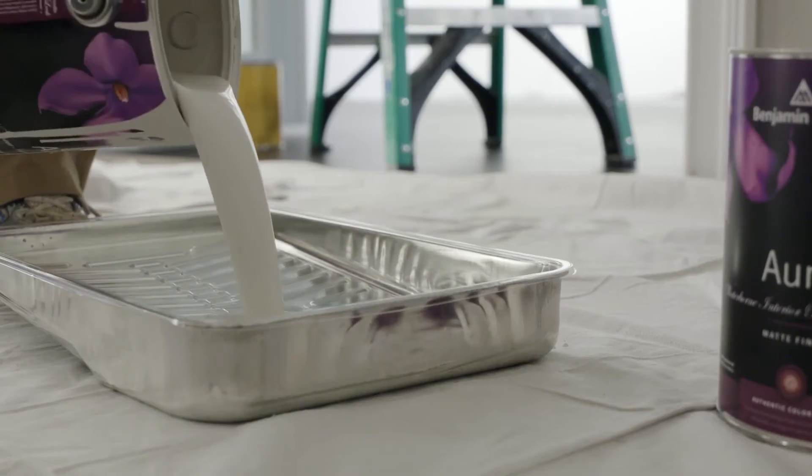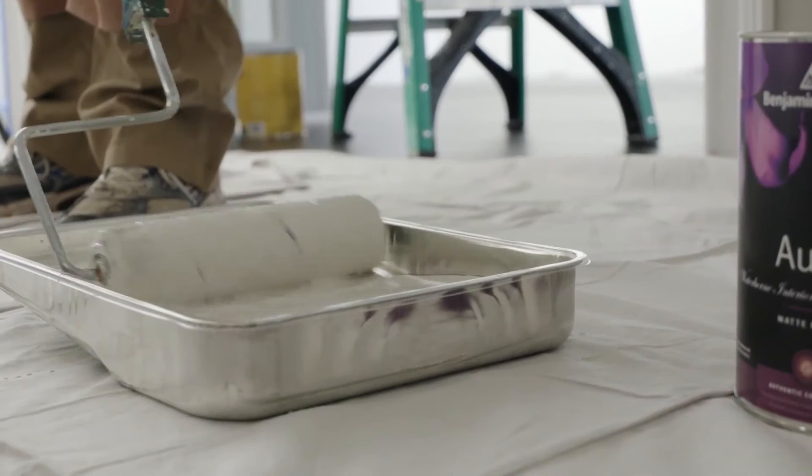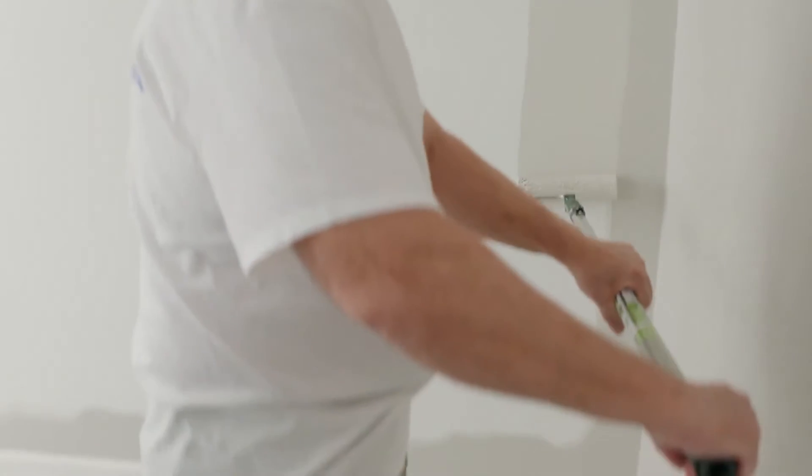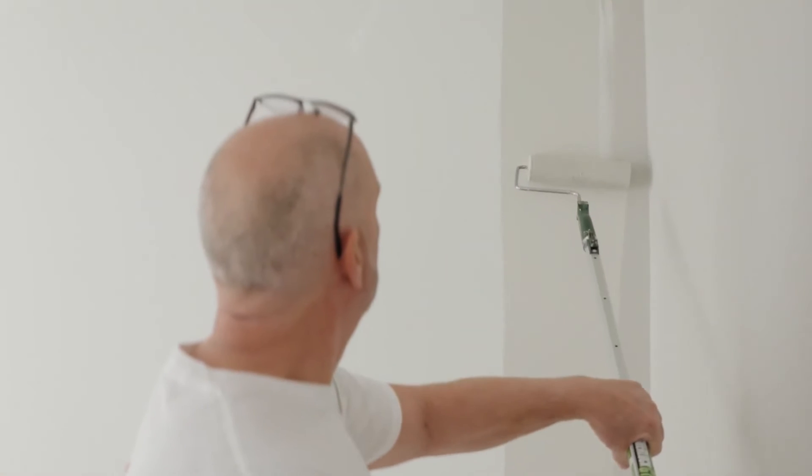Check out our other video, How to Cut in a Room, before you begin rolling paint. Once you've cut in the room, load the roller by gently rolling it back and forth in the pan until it collects the paint. Paint from the top of the wall down, with the edges overlapping approximately three to five inches.